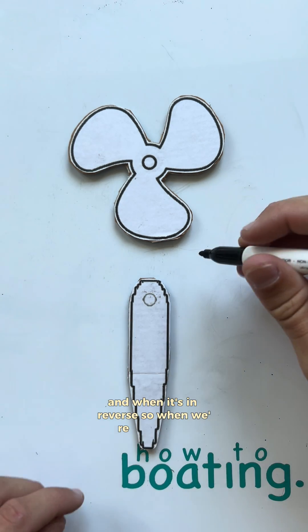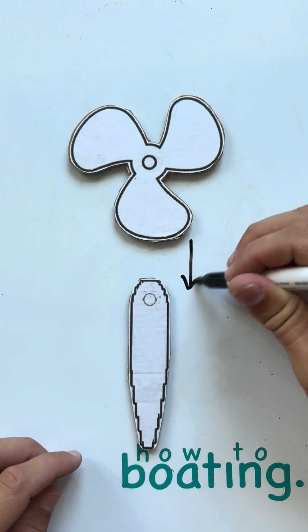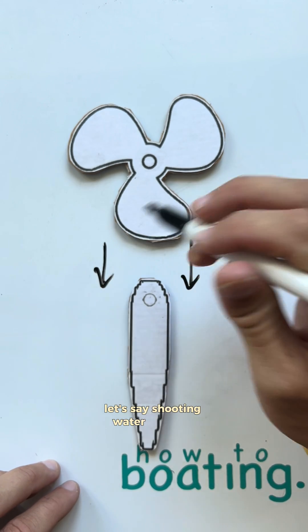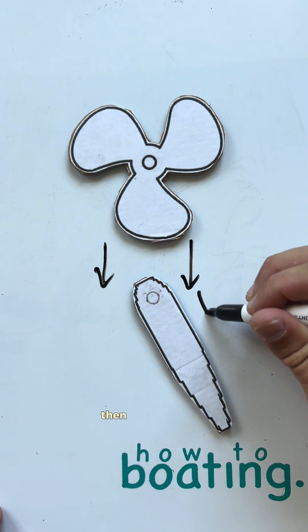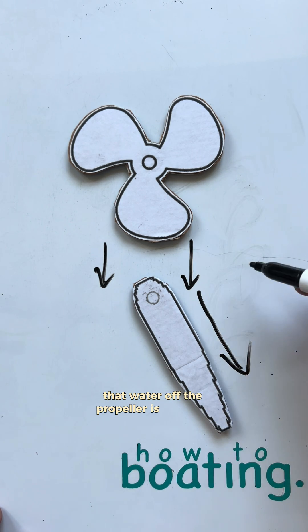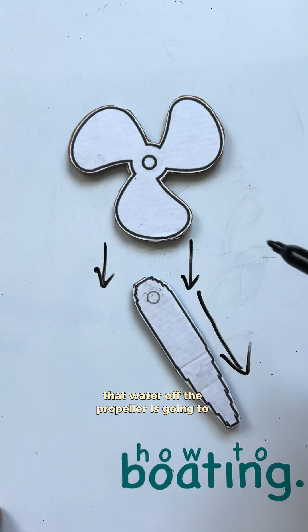So when we're moving forward, shooting water this way, if you turn to the right, let's say, then that water off the propeller is going to reflect off of that rudder.